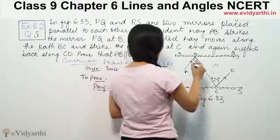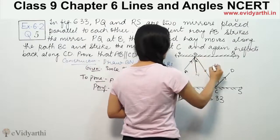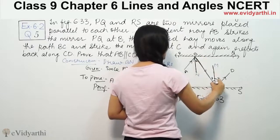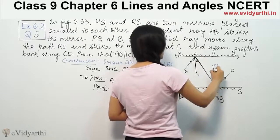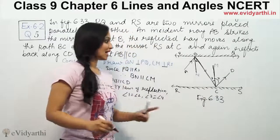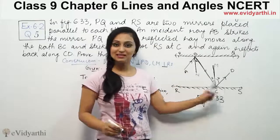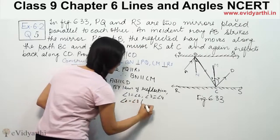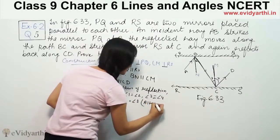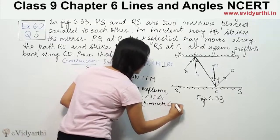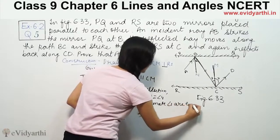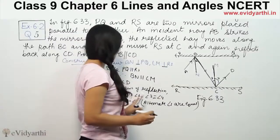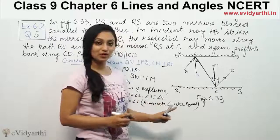Since BN is parallel to CM, and BC is a transversal, we can see a Z-shape, which means we have alternate angles. Therefore angle 2 is equal to angle 3. Now, since angle 1 equals angle 2, angle 2 equals angle 3, and angle 3 equals angle 4, we get that angle 1 equals angle 3 equals angle 4.